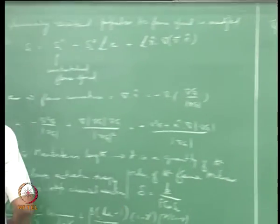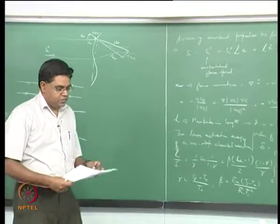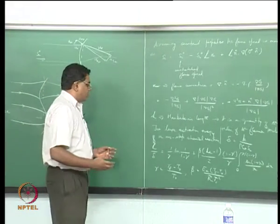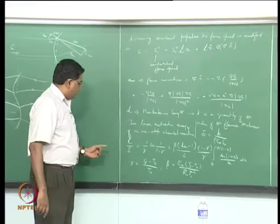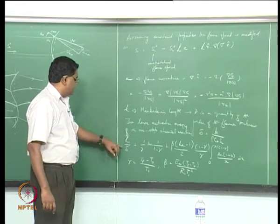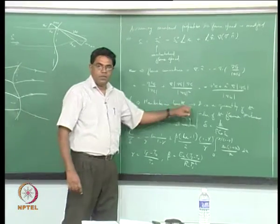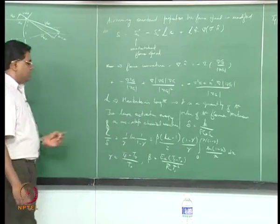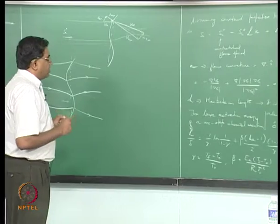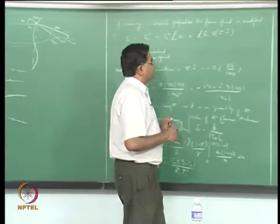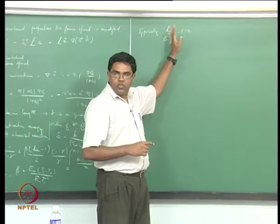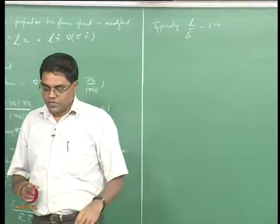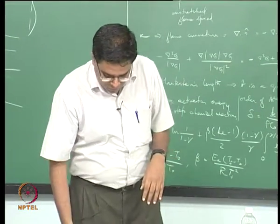Typically it is found that ℒ/δ is in the range of 2 to 6. Finding a curved flame shape is quite involved: the Markstein length depends on the flame thickness, the flame thickness depends on the flame speed, and the flame speed depends on the Markstein length — a loop within a loop that must be solved iteratively. Some analyses simply assume a constant Markstein length within this range.